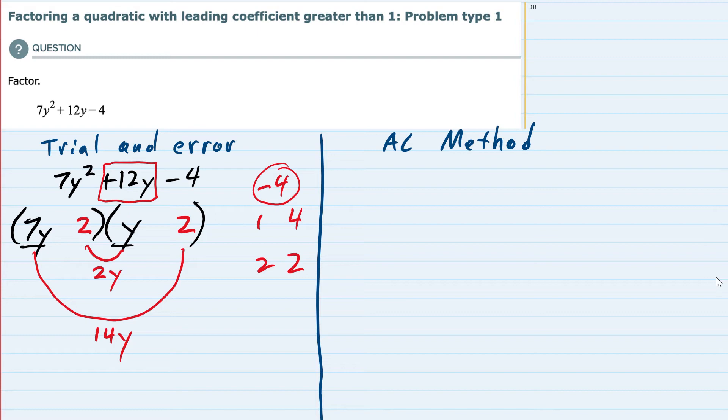If I make this a positive 2, then this would be a positive 14y. And I make this a negative 2, this would be a negative 2y. When I add these two, negative 2y plus 14y, that gives me the positive 12y that I was looking for for the middle term. Just checking when I multiply, negative 2 times positive 2, that does in fact give me the -4. So yes, this combination worked.